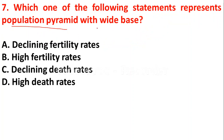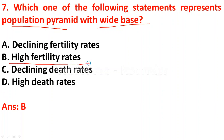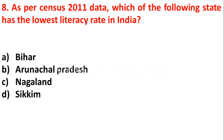Question 7: Which one of the following statements represents a population pyramid with a wide base? Option A - declining fertility rates; option B - high fertility rates; option C - declining death rates; option D - high death rates. A population pyramid with a wide base represents high fertility rates — option B.